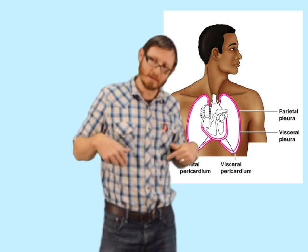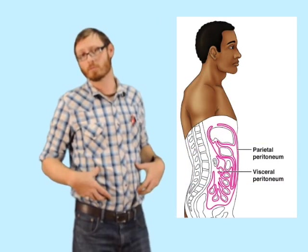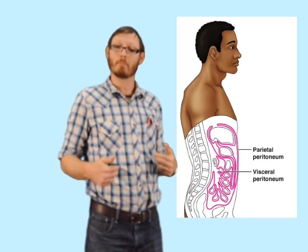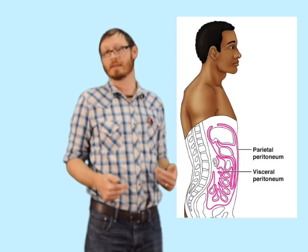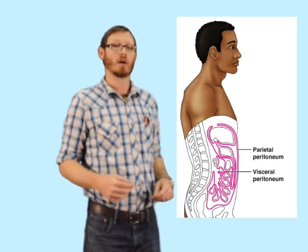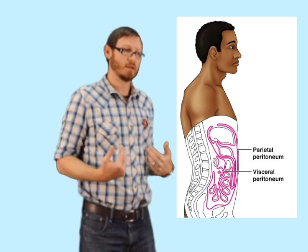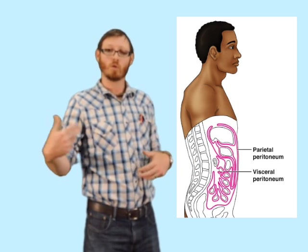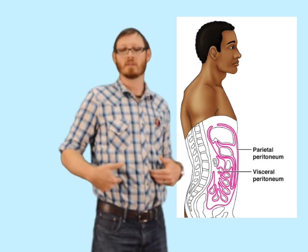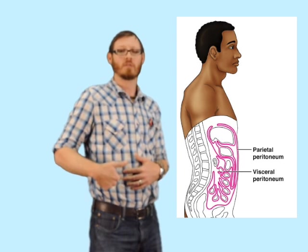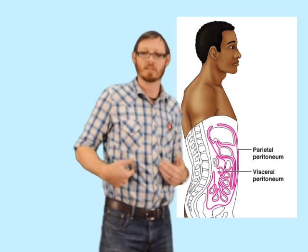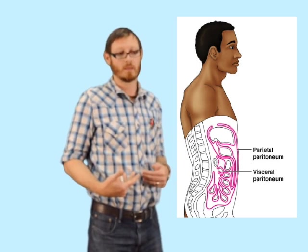When we go down to the abdominal pelvic cavity, instead of a visceral and parietal pleura, we have a visceral and parietal peritoneum. The serous membranes inside the abdominal pelvic cavity are referred to as peritoneums. So if I had a knife wound or a bullet wound to my abdominal pelvic cavity, the order of penetration would be: initially through the parietal peritoneum, then through the serous fluid into the visceral peritoneum, and then into any vital organs unfortunate enough to be behind that area.